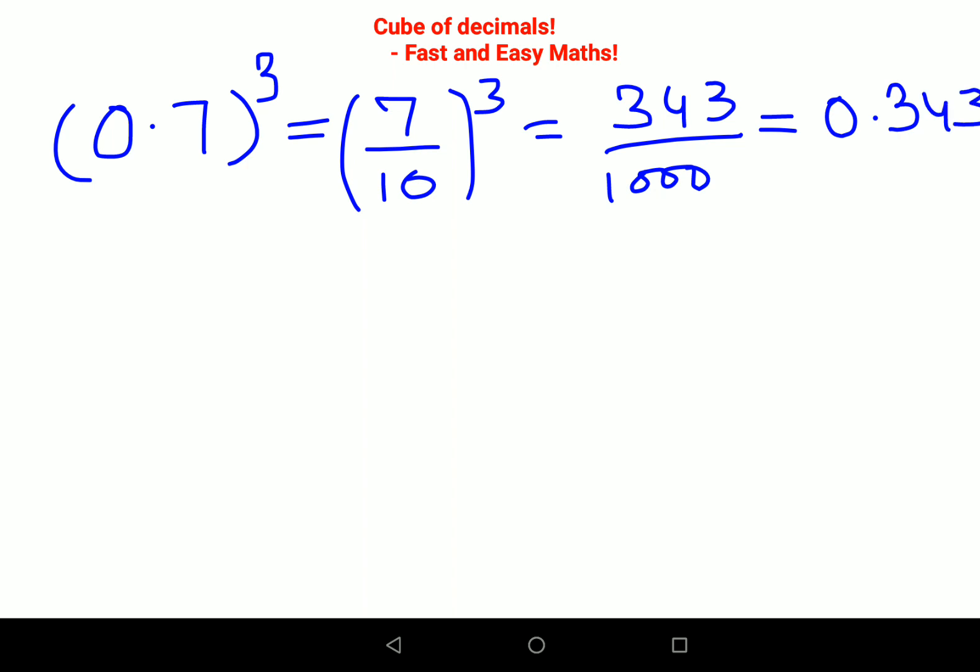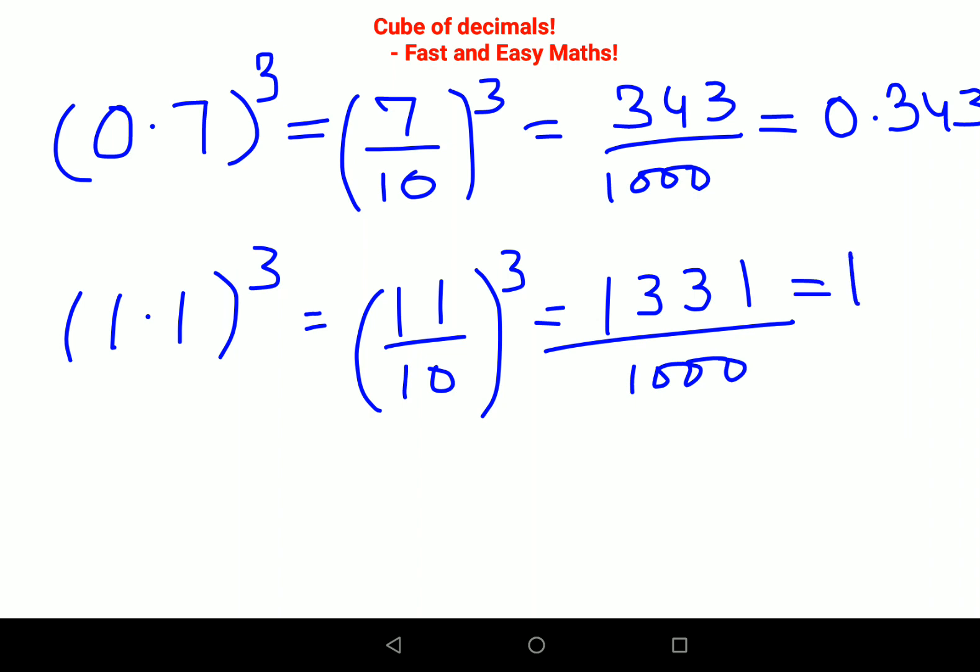Very quickly let's do 1.1 cube. This is basically 11 upon 10, the whole raised to 3. So we have 1331 upon 1000, so your answer now changes to 1.331.